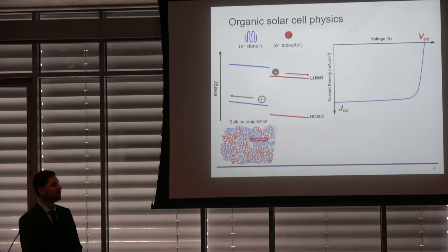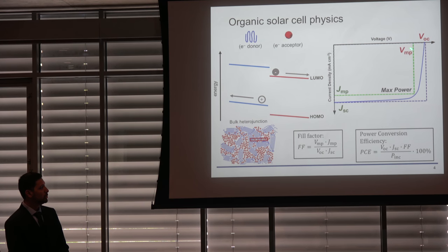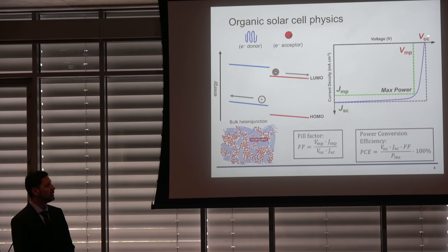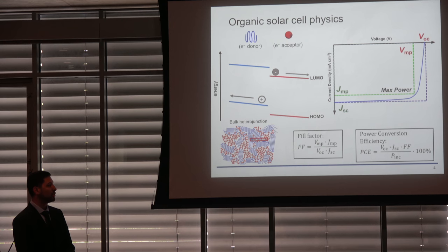To measure the properties of these solar cells, you construct a JV curve. The inflection point is the max power point, with voltage VMP and current density JMP. The theoretical limit is determined by the open circuit voltage and short circuit current. Dividing the areas of these two curves gives the fill factor. Together with the fill factor and incident power, you can calculate the efficiency of the device.